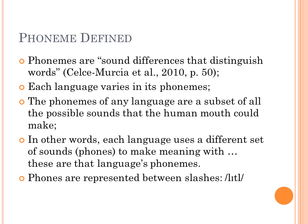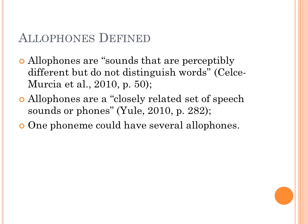Finally, this brings us to allophones. Allophones are sounds that are perceptibly different, but do not distinguish words. Allophones are a closely related set of speech sounds or phones, and one phoneme could have several allophones. The phoneme represented by the letter K could be pronounced sometimes with aspiration — a little extra breath coming out after the stop is released — or without aspiration, as in the word skill. So the phoneme K in kill and skill may be a slightly different phone, but it's still the same phoneme.